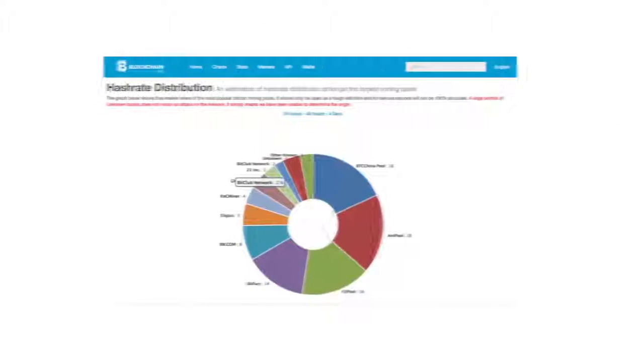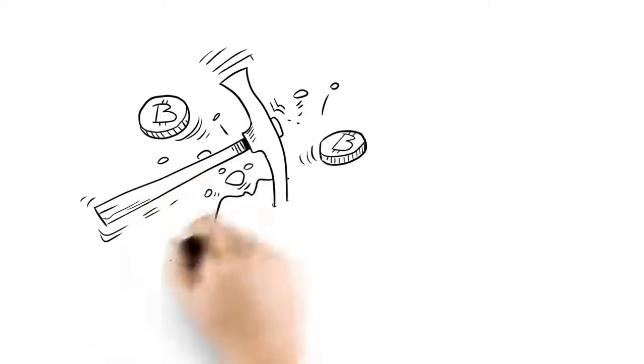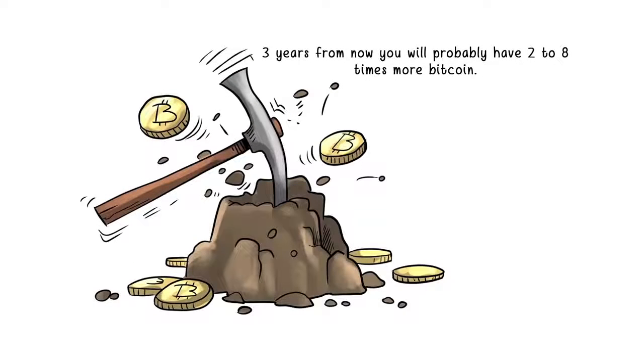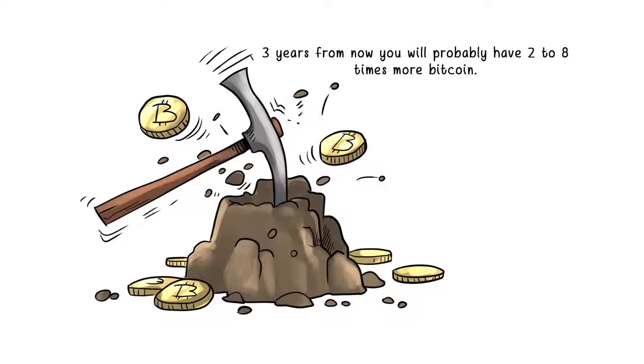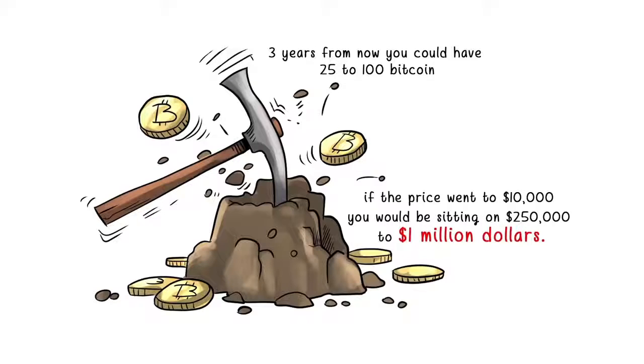If you join the BitClub Network mining pool, instead of just buying Bitcoin and holding it, three years from now you will probably have two to eight times more Bitcoin. So let's say you were going to buy 15.5 Bitcoin as an investment and the price went to $10,000. You would turn about $3,600 into $155,000. But if you take that same amount of Bitcoin and put it into mining with us, three years from now, you could have 25 to 100 Bitcoin. And if the price went to $10,000, you would be sitting on $250,000 to $1 million.